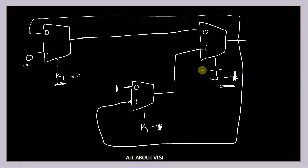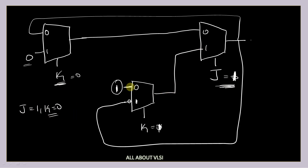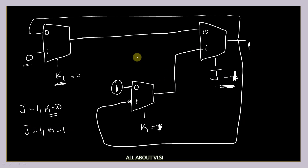So this is my JK latch using 2x1 MUX. Verification: J=0, K=0 — hold condition satisfied. J=0, K=1 — reset condition satisfied. J=1, K=0 — we take the output from the third multiplexer pin which is 1, so QN+1 equals 1. J=1, K=1 — we take the complement of the output, which is the toggle condition. This is how we build a JK latch using 2x1 MUX.